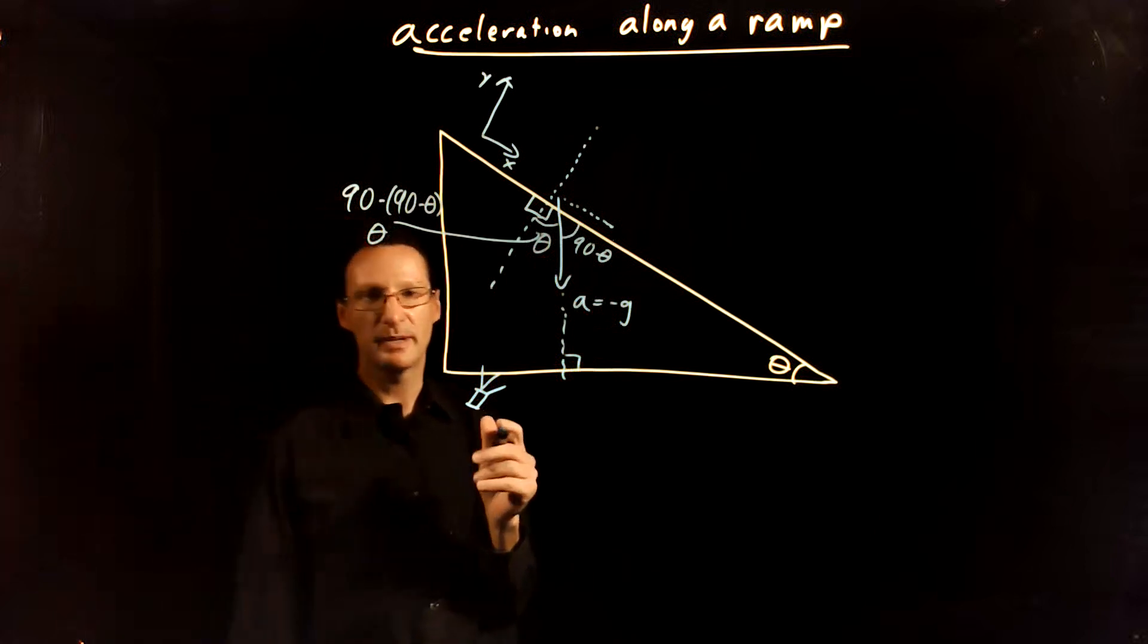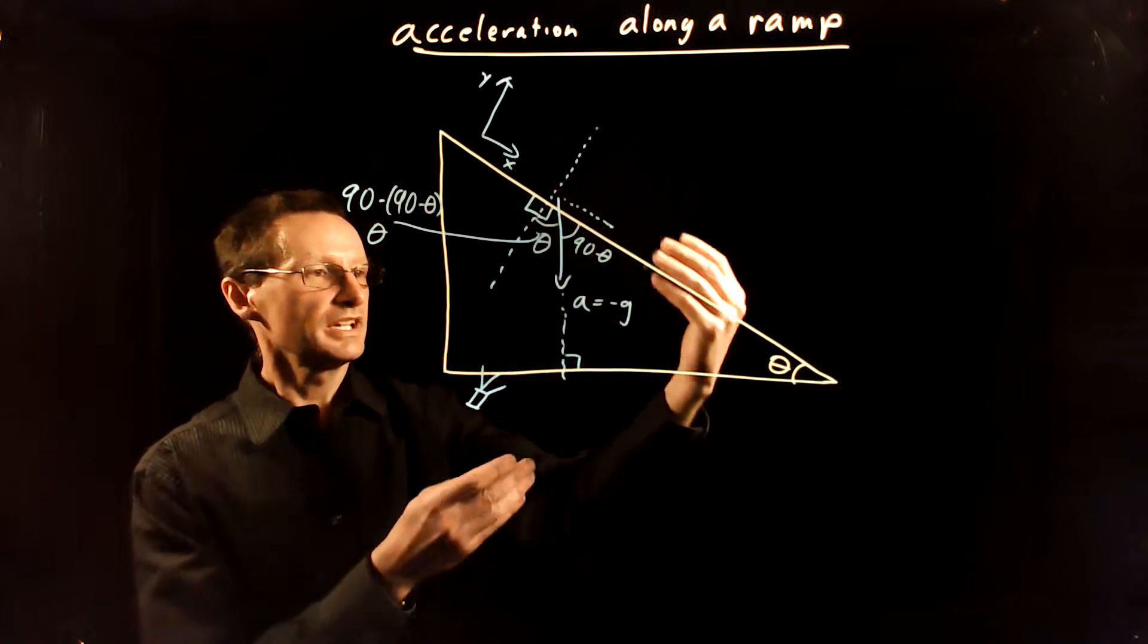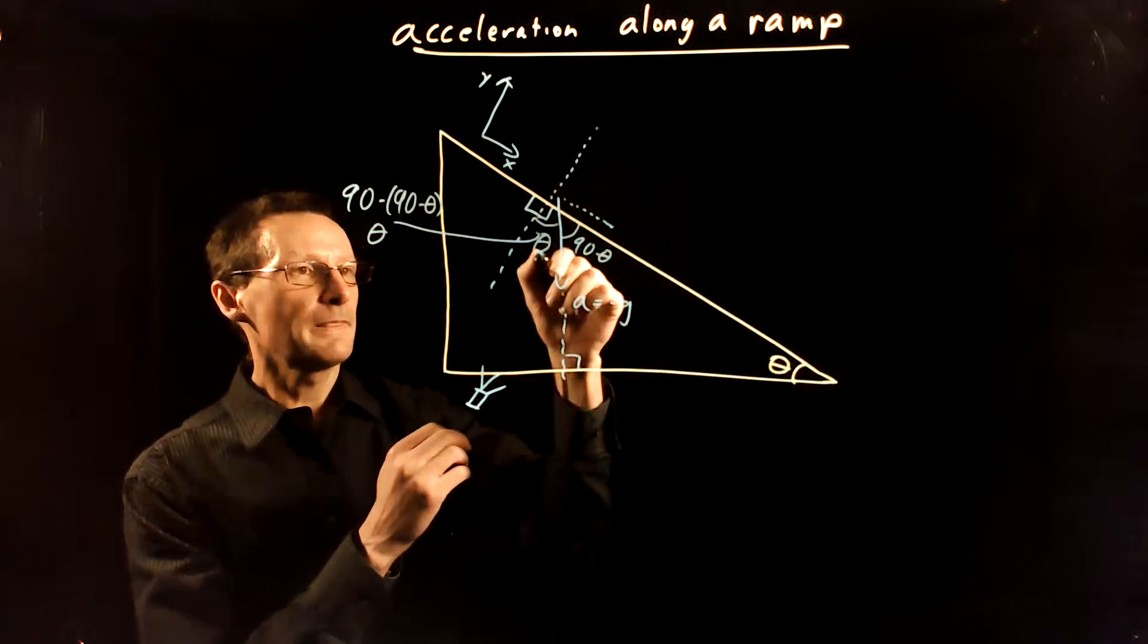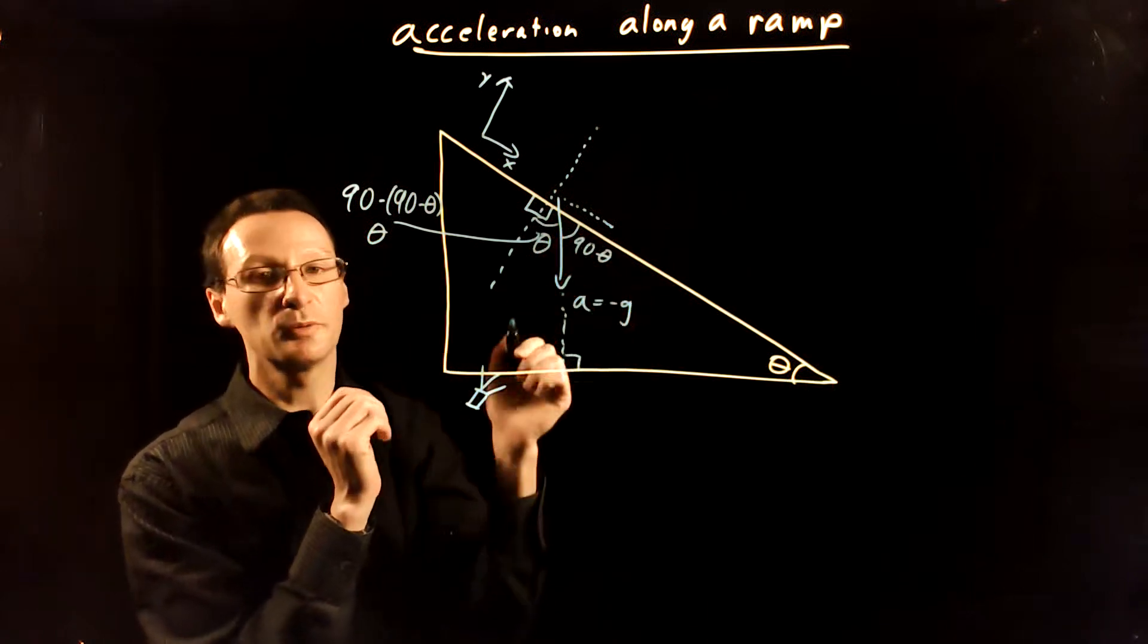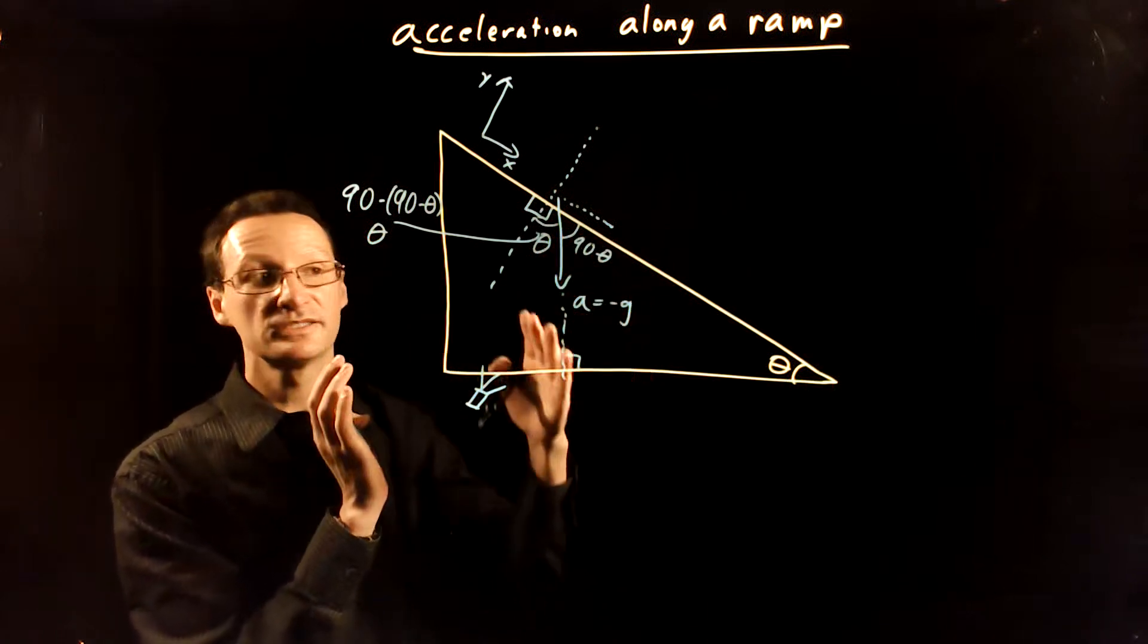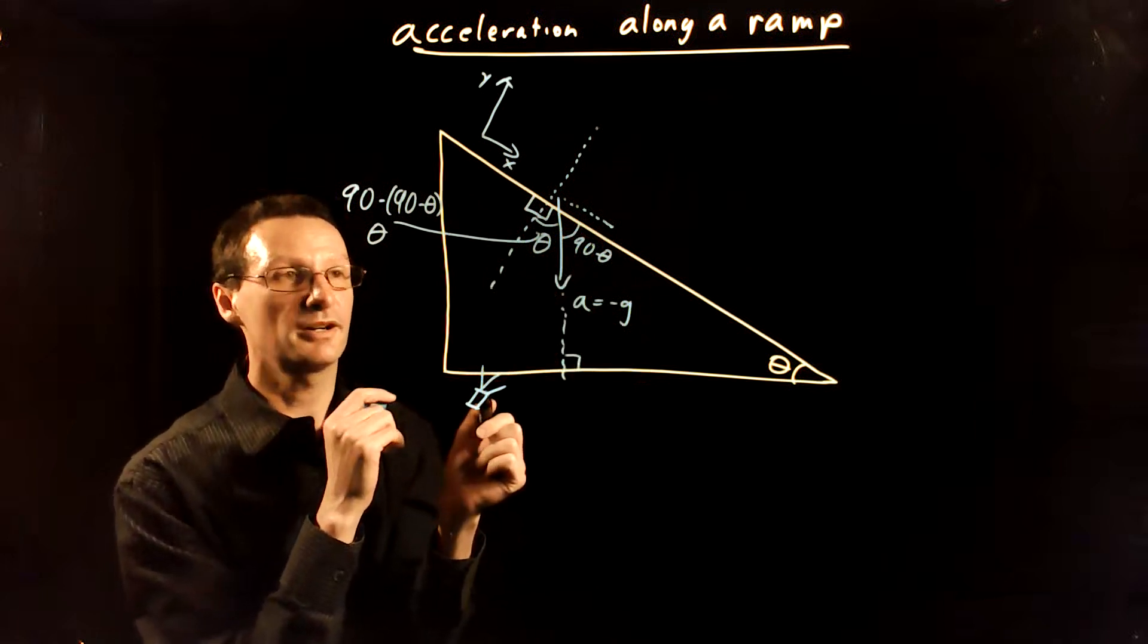And if you're unsure about this, think about what would happen if I shrunk this—if I shrunk the angle theta, then this angle here would shrink down to zero and this angle would open up and become 90 degrees. So I think you can convince yourself that angle there is also theta.